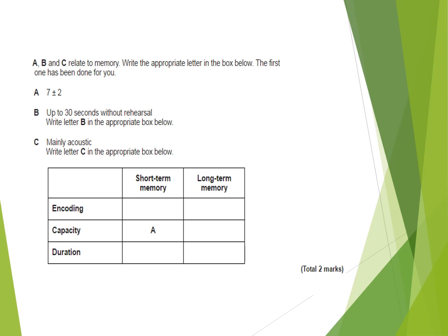Let's look at some example questions you could be asked. You might be given a list of statements and have to input them into the correct part of a table. A is '7 plus or minus 2', which is the capacity of our short-term memory. B is 'up to 30 seconds without rehearsal' — that's Peterson and Peterson's finding, so that's our duration of short-term memory. 'Mainly acoustic' relates to encoding or coding. Thinking back to Baddeley's research, we remember that encoding in short-term memory is acoustic, so that goes in that section.